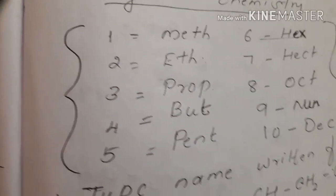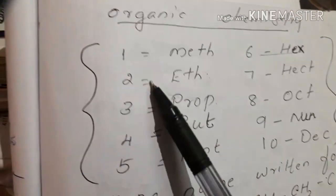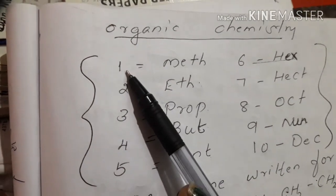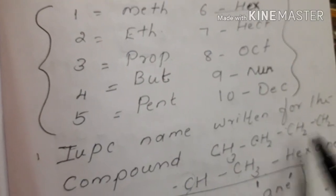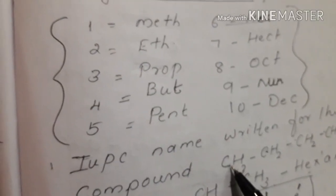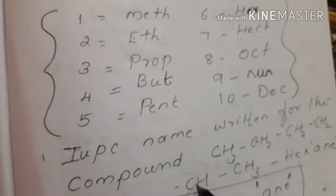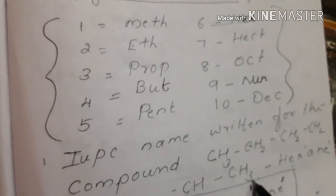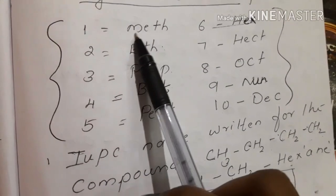There is a carbon atom. You can see CH3, CH2, CH2. Now, what do we need to do? There is a total compound. There is a total carbon count. There is one name.